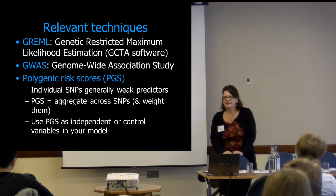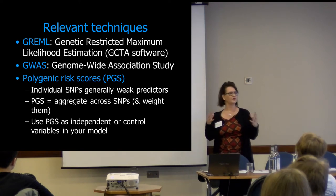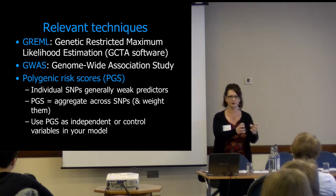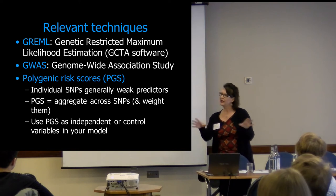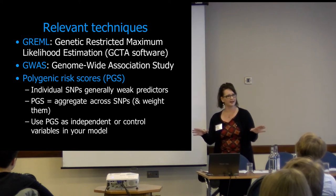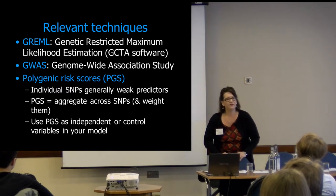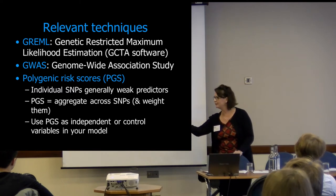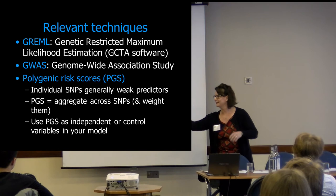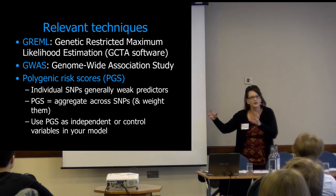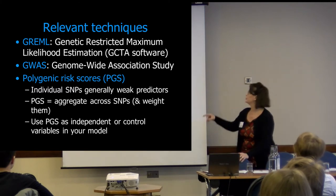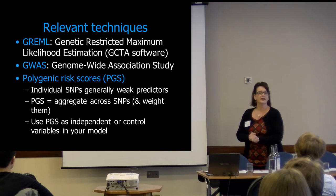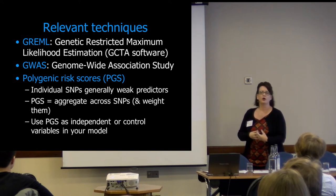Then I'm going to talk about genome-wide association studies, and from those we draw what's called polygenic scores. In 2015 we did a GREML analysis where we looked at whole genome data from various populations to see what is the heritability of age at first birth and number of children ever born. So let's do some guesses — what do you think the genetic variance explained, or the genetic heritability of age at first birth would be?